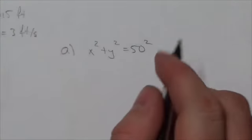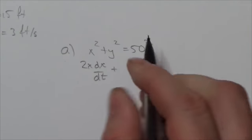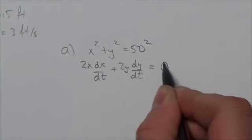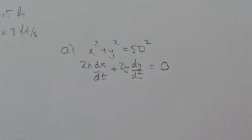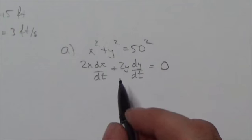So now, let's take the derivative. So 2x dx by dt plus 2y dy by dt is going to equal 0. Because the length of the ladder is a constant. It doesn't change in time.